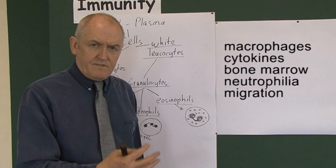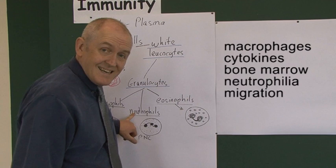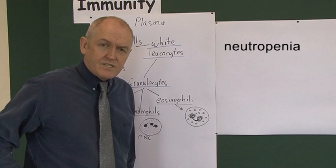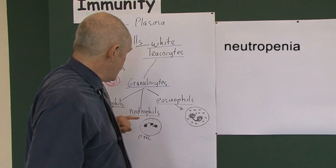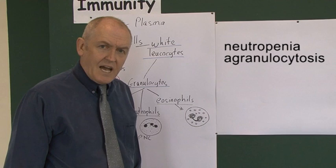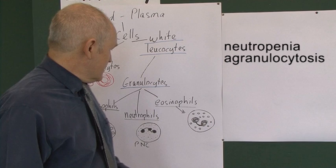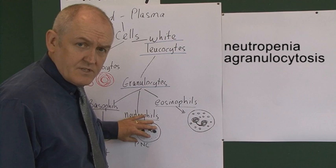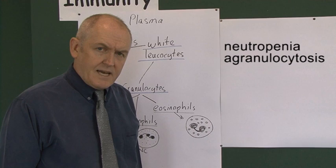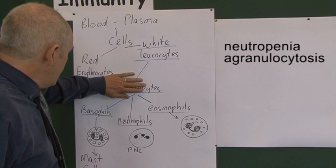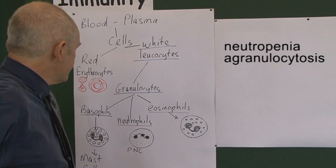Neutrophils are found in tissues where there are areas of infection, where they deal with bacterial infection. Neutropenia means not enough neutrophils, and a very significant reduction is called agranulocytosis — literally, no granular cells. A patient with agranulocytosis has their life at risk from overwhelming bacterial infection, because that is what the neutrophils counter.